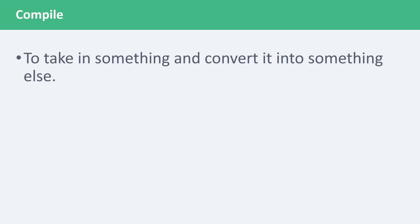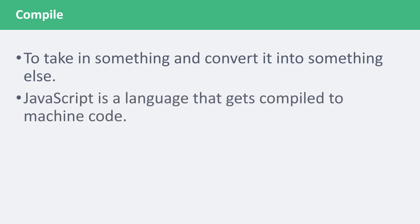First, we need to understand what the word "compile" means. To put it simply, to compile something means to take something in and turn it into something else. In the programming world, it usually means to take in your code and convert it into other code so that another program can understand it. One example is the JavaScript language. Machines don't understand JavaScript, so you need to run it through a compiler that will convert it into machine code. The browser handles that process for you whenever you load a JavaScript file.